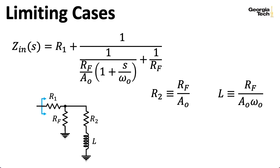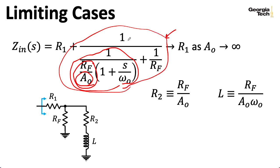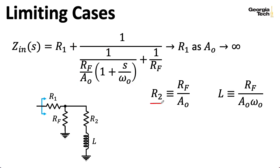Let's think about some limiting cases. As A naught goes to infinity, notice that R2 goes to zero, so this shorts out, and L goes to zero, so this also shorts out. Basically RF is shorted out, and you're just left with R1. You can see that in the equation: as A naught goes to infinity, this term goes to zero, which makes the parallel branch go to infinity, so that term goes to zero, and the expression reduces to R1.